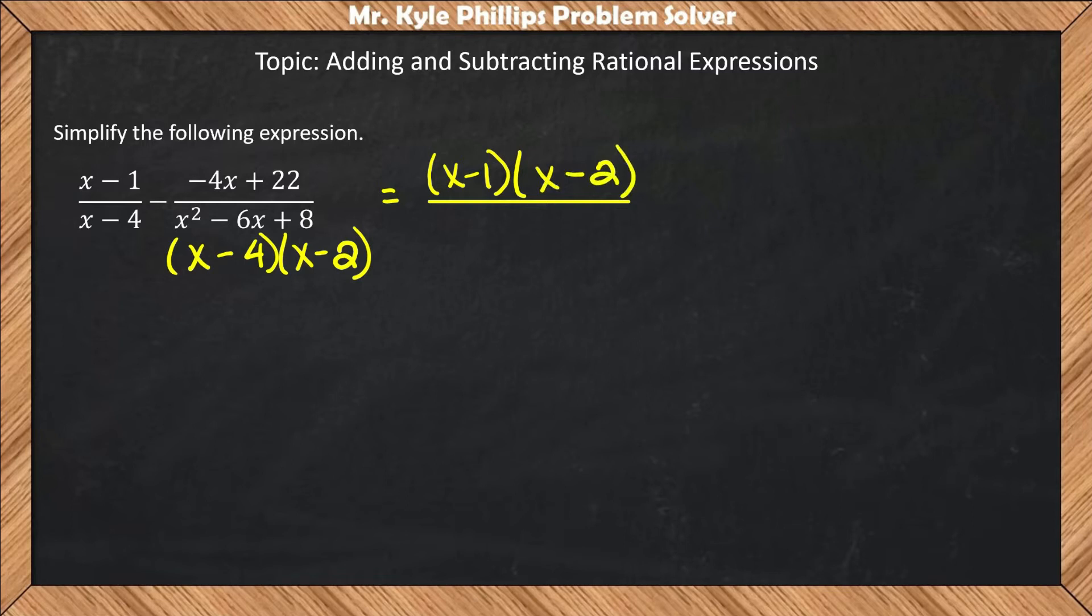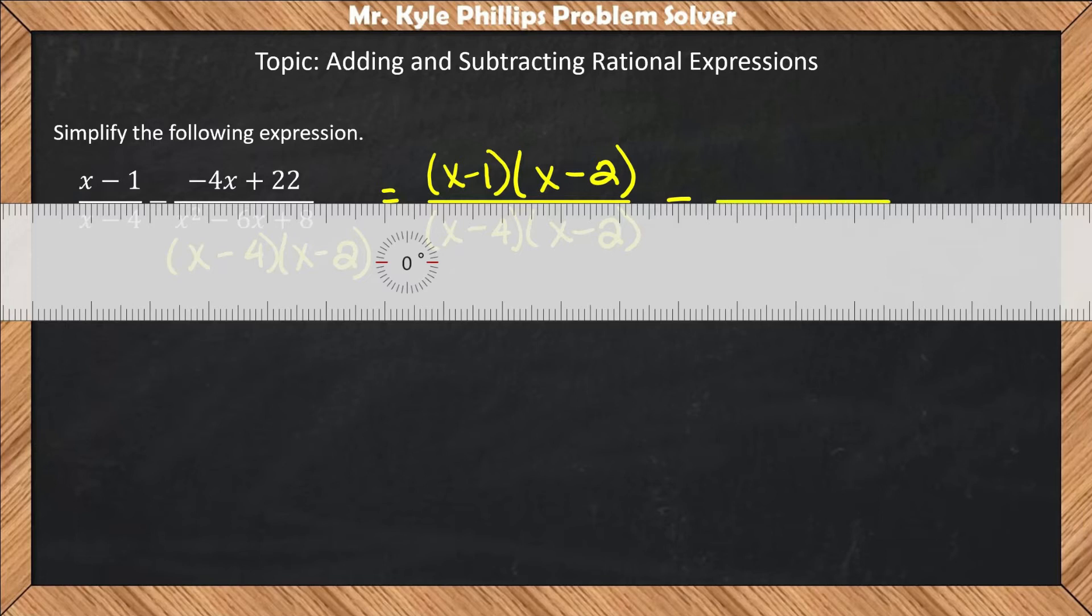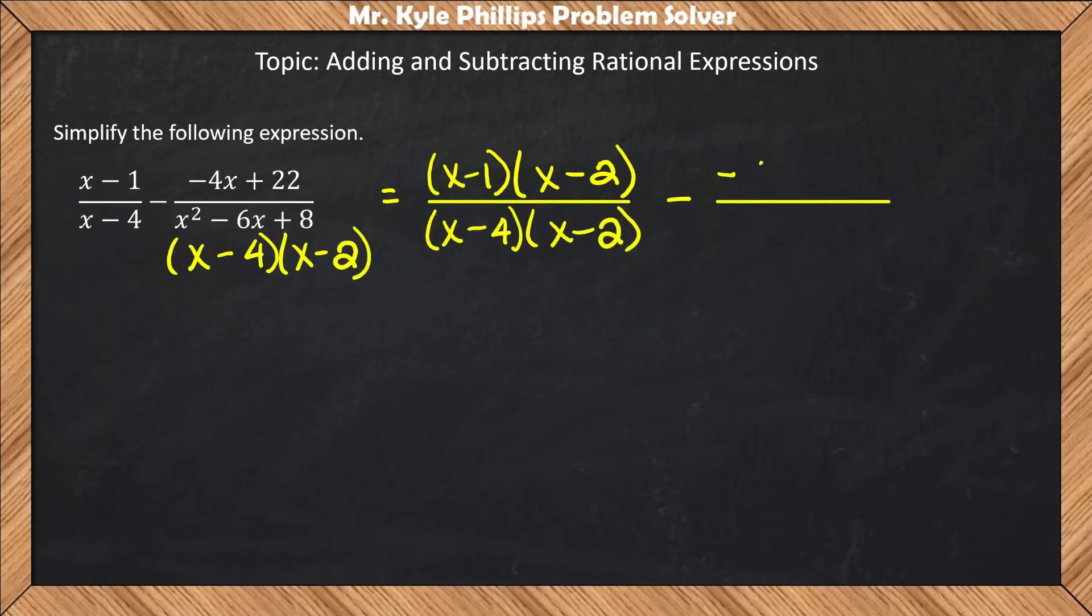And remember, whatever you do to the top, you have to do to the bottom. So on the bottom, this will be x minus 4 times x minus 2. Now you'll notice that my denominators are the same. So here I'll say minus, and that is negative 4x plus 22. This will be all over x minus 4 and x minus 2.